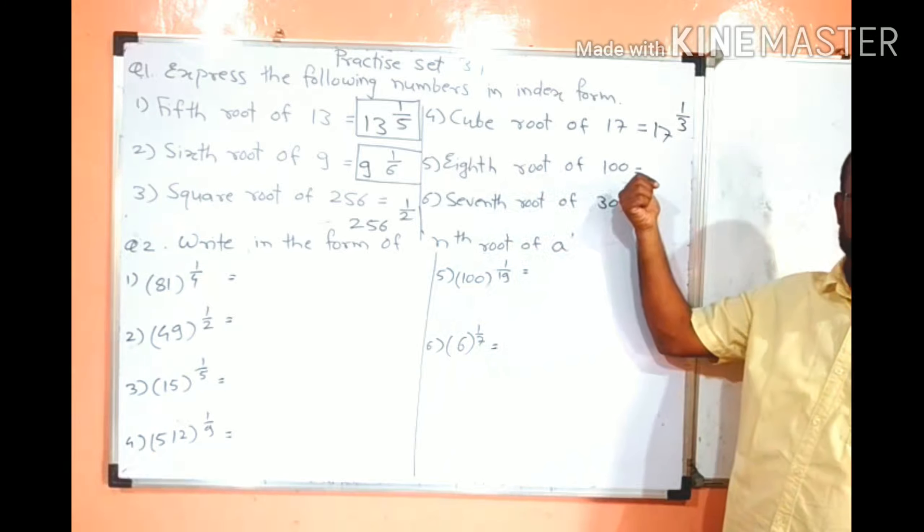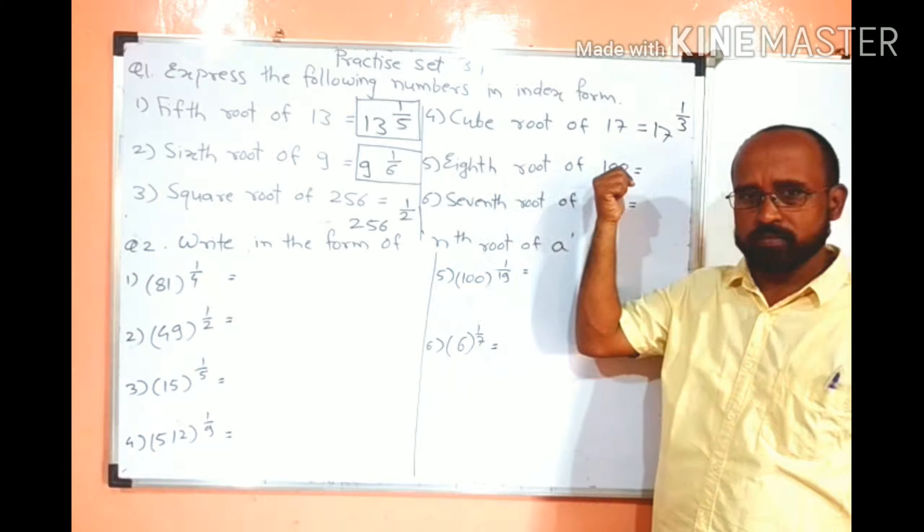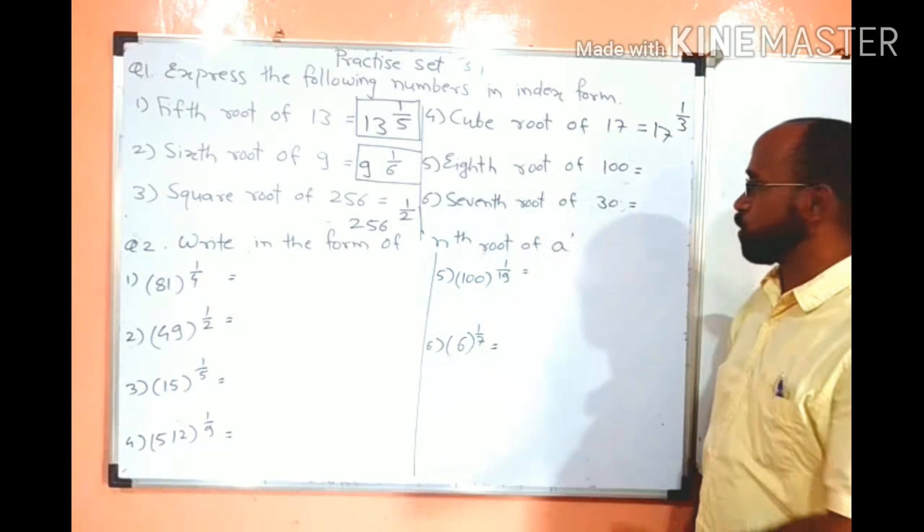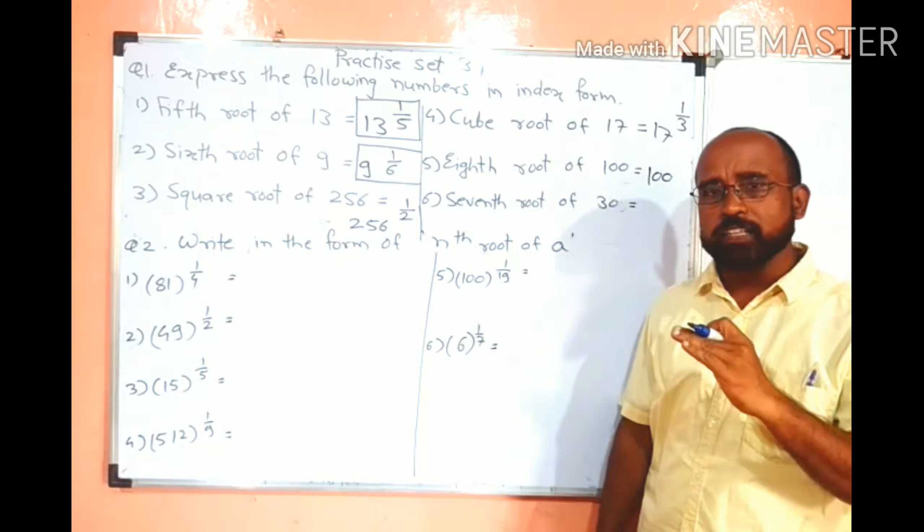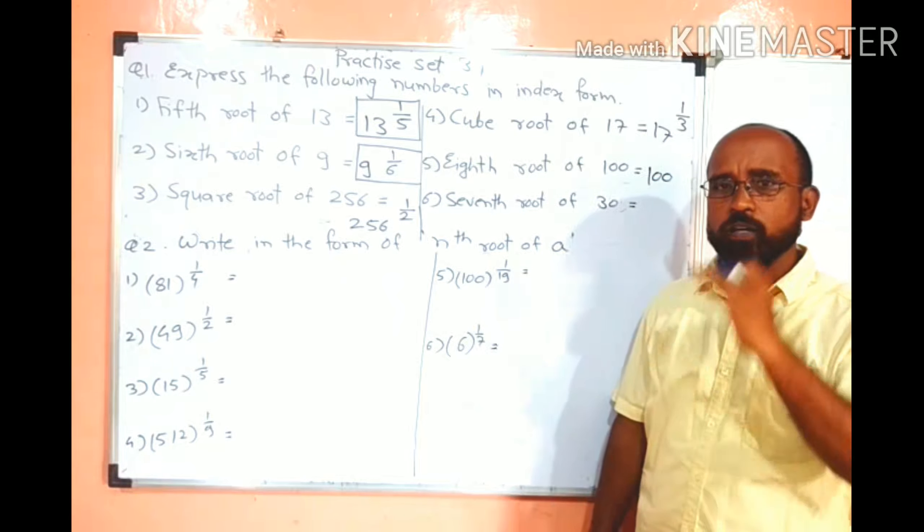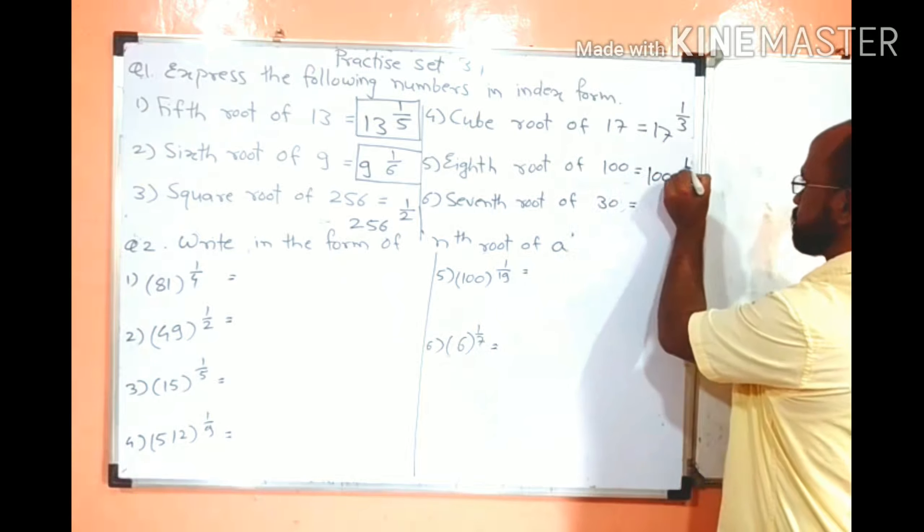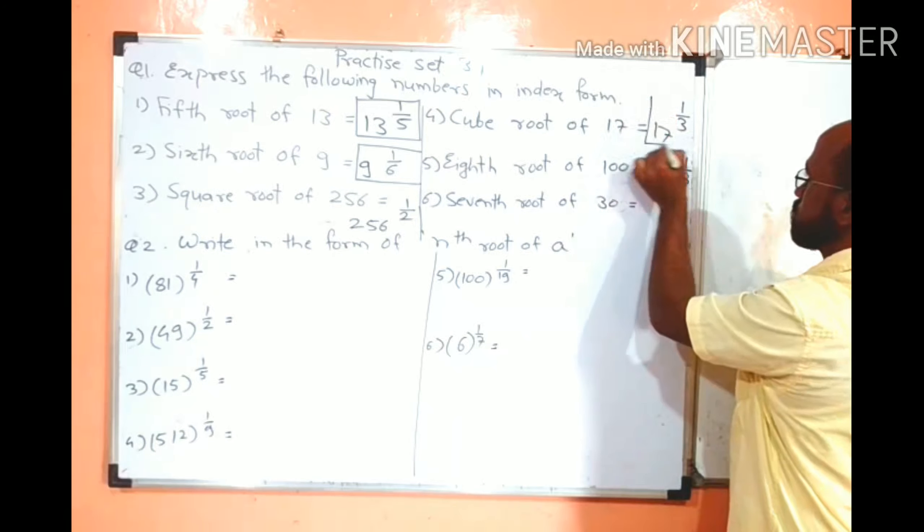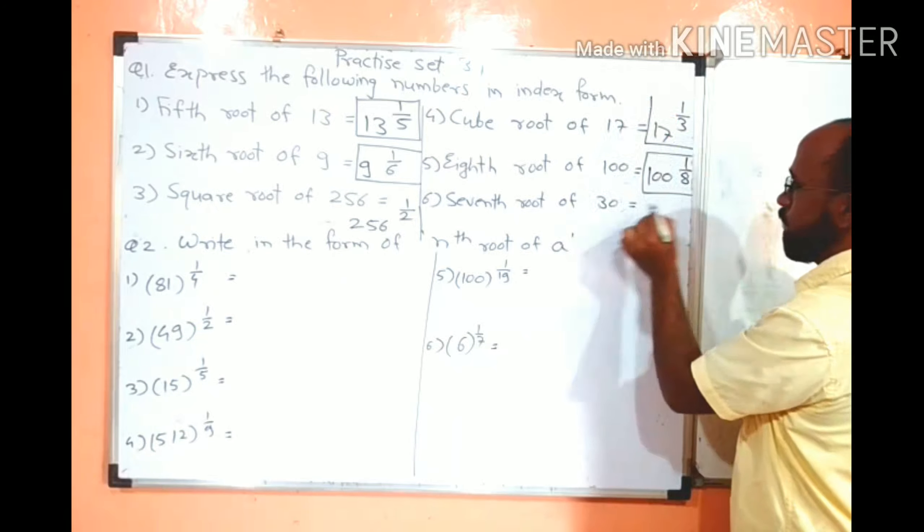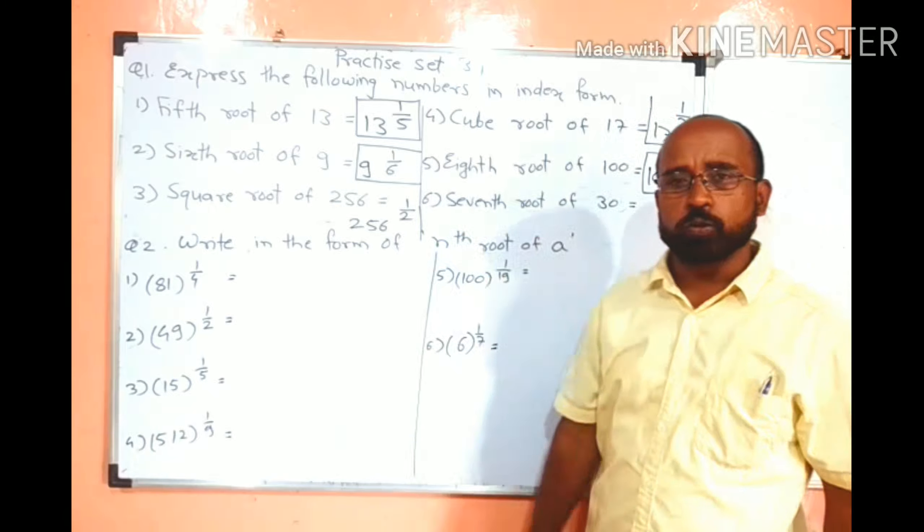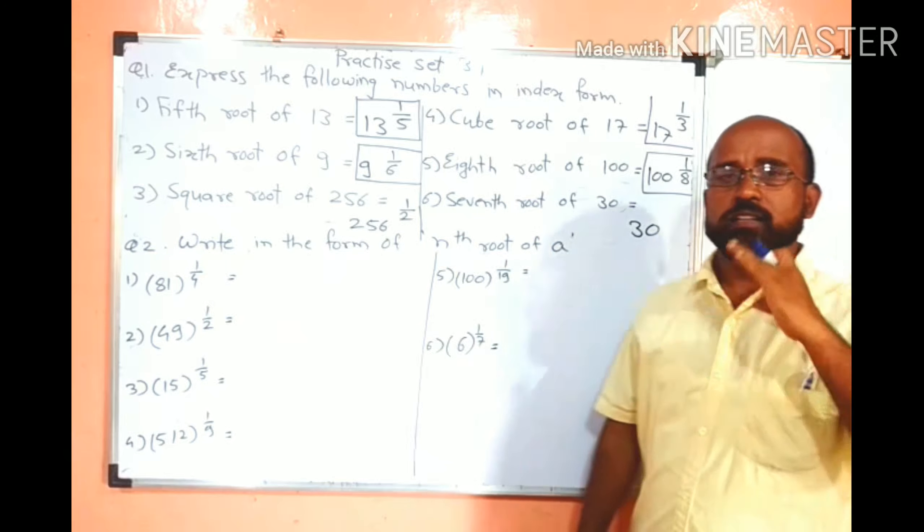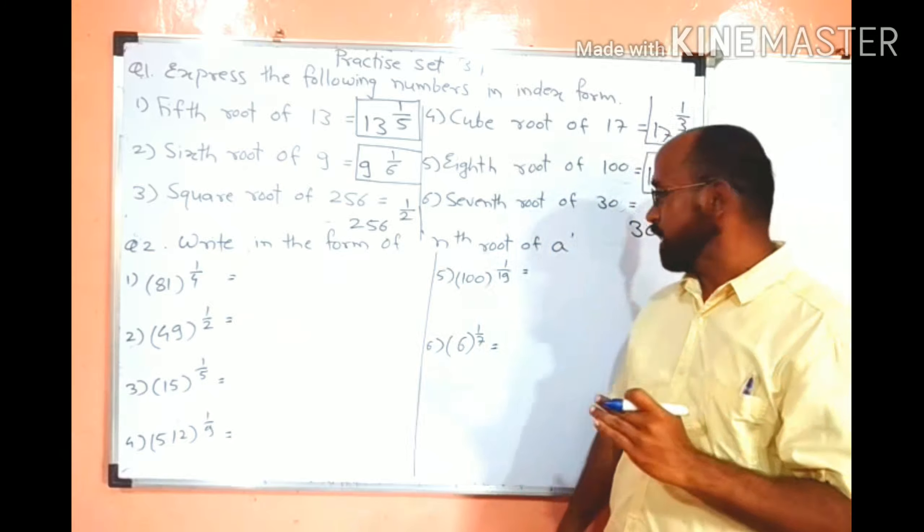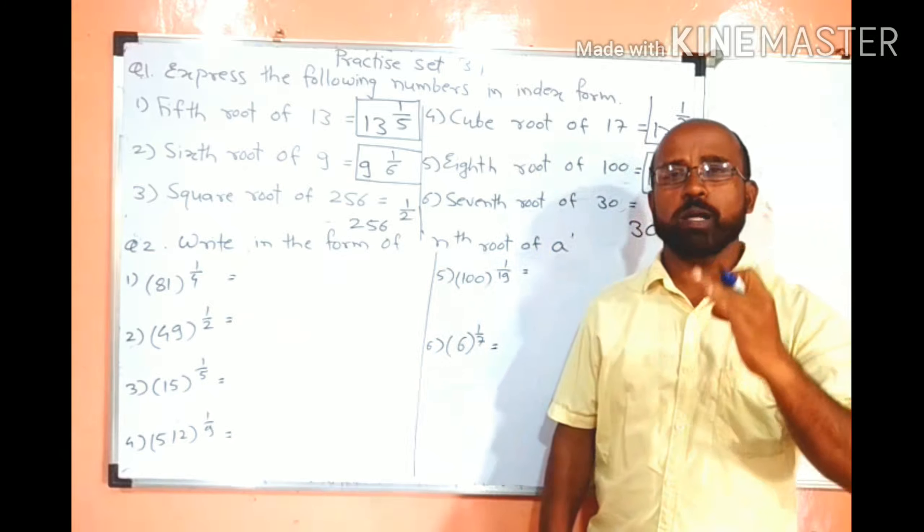8th root of 100. 100 is the base and root is 8th. So we will write 100 as base, and root will be 8th root, means inverse of 8 or 1 upon 8. Clear friends? And final one is 7th root of 30. So 30 is the base and root is 7th, means 30 raised to 1 upon 7.